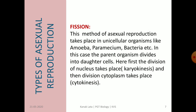The first type is fission. Fission is a type of asexual reproduction that takes place in unicellular organisms like amoeba, paramecium, bacteria, etc. Here, the parent body divides into two daughter cells. In this case, first there is division of the nucleus, called karyokinesis, and then division of the cytoplasm, called cytokinesis. So first the nucleus divides and then the cytoplasm divides.